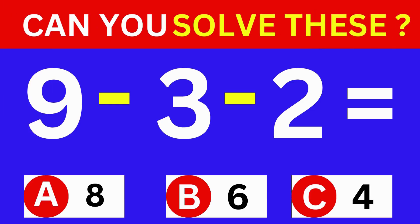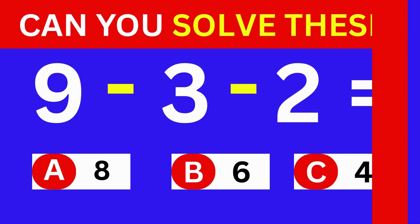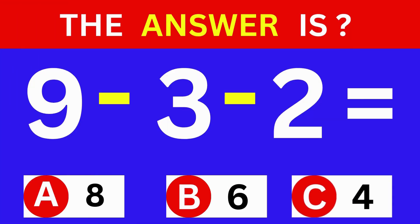9 minus 3 minus 2 equals. A. 8. B. 6. C. 2. The answer is Option C. 4.